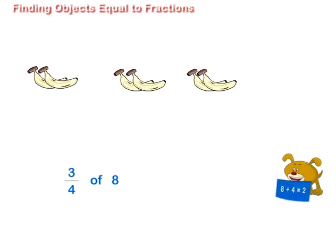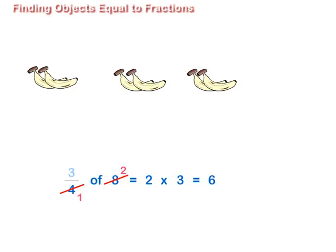Therefore, three upon four of eight is equal to two multiplied by three is equal to six.